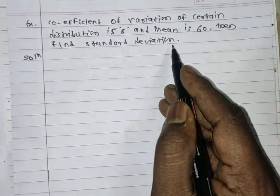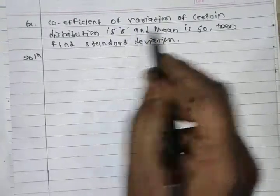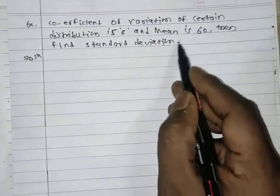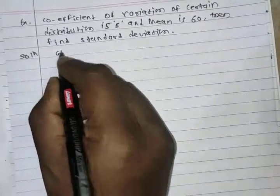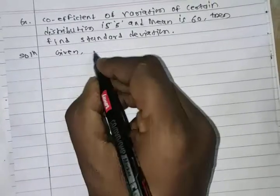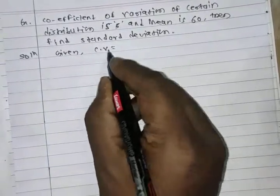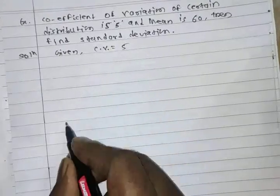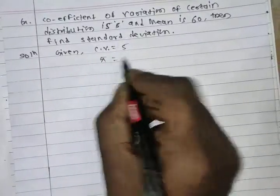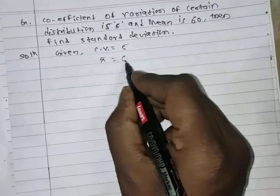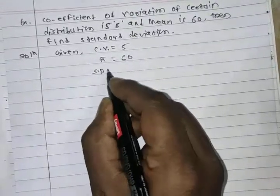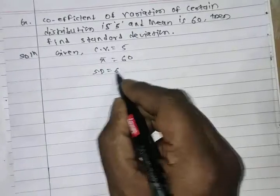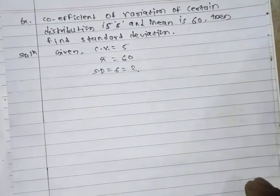Here, coefficient of variance is given as 5, mean x-bar is given as 60, and we have to find the standard deviation sigma. We write the formula: C.V. = sigma upon x-bar, multiplied by 100.